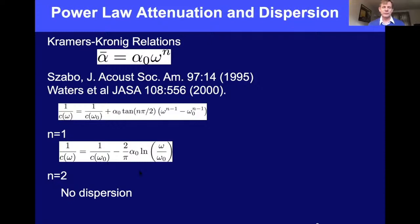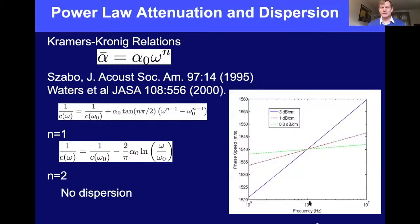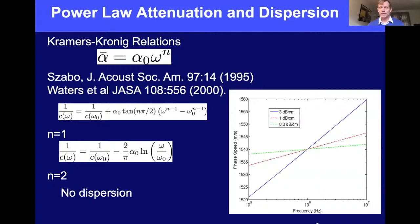For the n=1 case, plotting sound speed from 100 kHz to 10 MHz with all set to 1540 m/s at one megahertz shows that at 0.3 dB/cm attenuation you get about a two m/s change over two orders of magnitude in frequency. To get significant sound speed changes, you need much higher attenuation. The effect is present but small for many cases, though it could be important where precise sound speed matters.